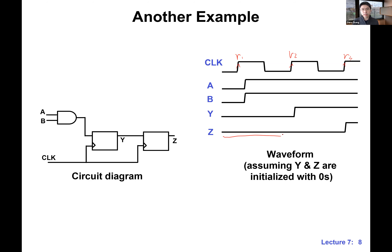This relates to setup time — something we'll discuss in a week or so. Basically, the input needs to change right before the edge before it can be captured. So Z will not respond until R3. You can look at this waveform and see the delay. In many cases, people just call a register a one-cycle delay. Z is basically a one-cycle delayed version of Y — we need to go through one more cycle before we see the change on the Z output.